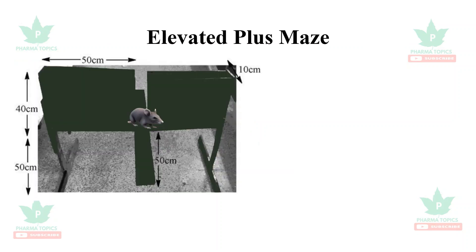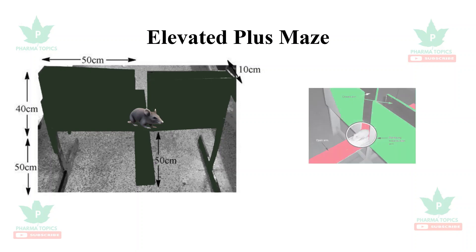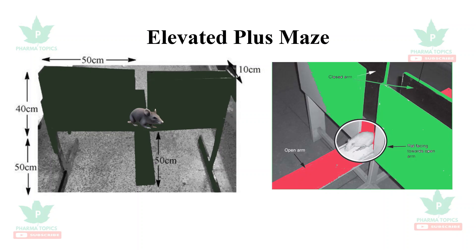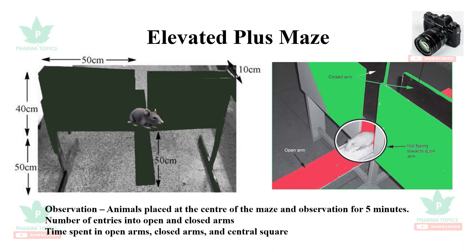The first model is the elevated plus maze. It is a very widely used model to test anxiety in animals, particularly rats and mice. It has a height of 40 to 50 centimeters and appears like a plus sign. The time spent by the animal in the closed arm and the open arm, and the number of entries into the open arm and closed arm, are recorded.